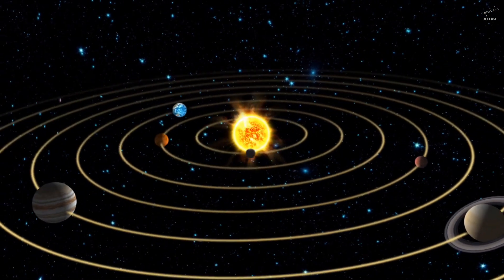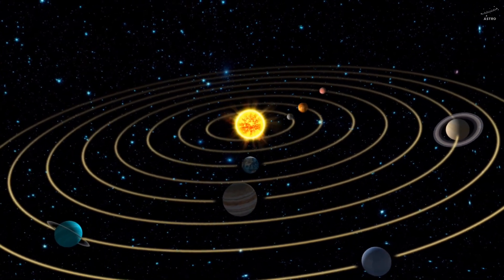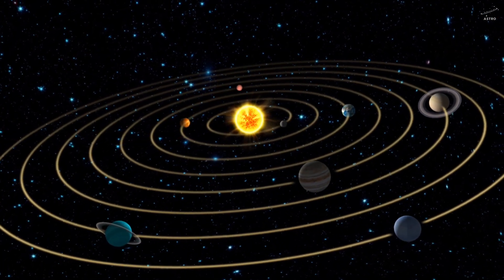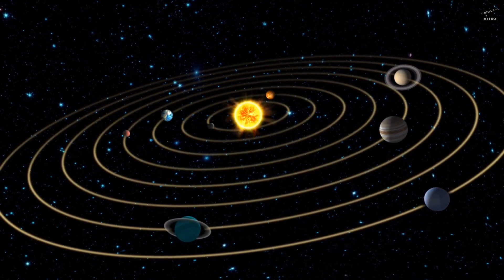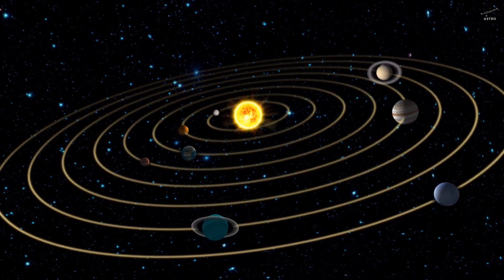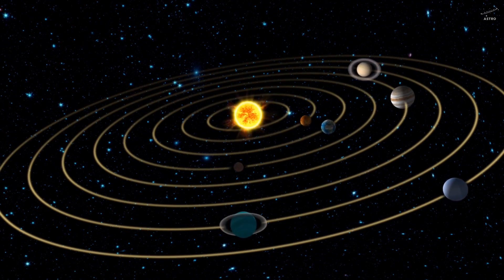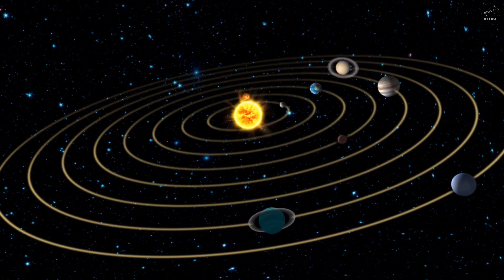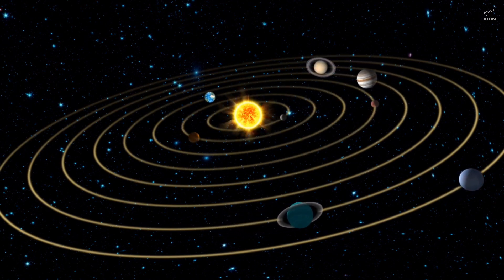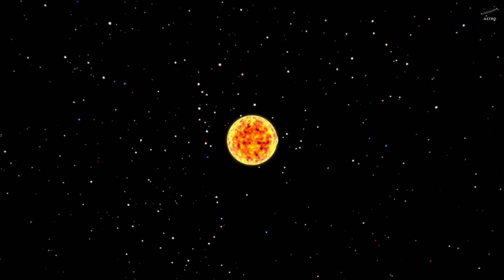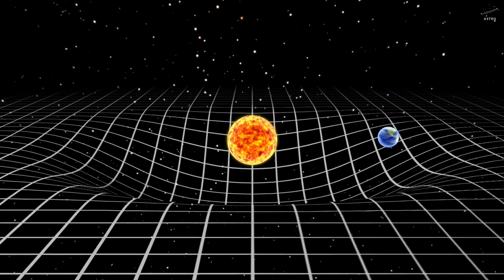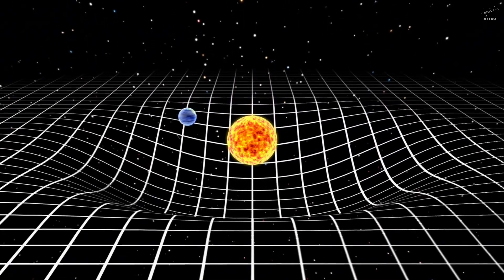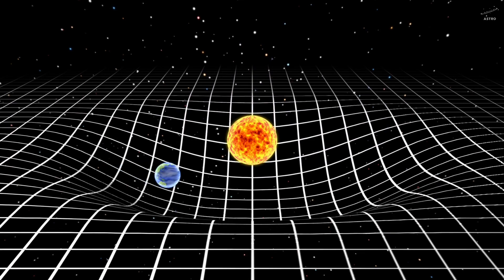Earth is moving sideways at roughly 30 kilometers per second. And that motion, that perfect sideways glide, keeps it in a constant fall. A fall that's always missing. It's being pulled in, but it's moving too fast to ever fall straight down. It's like someone running inside a giant bowl. They're always being drawn to the center, but as long as they run fast enough, they stay near the edge. Circling. Spinning. Never falling in.